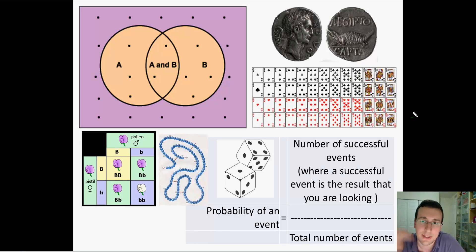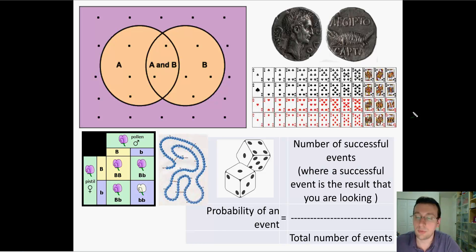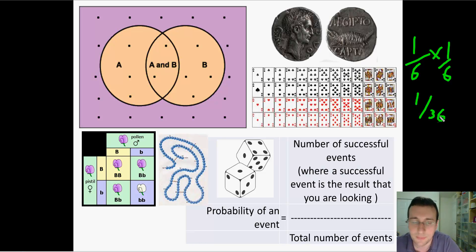Let's do another example. Pause the video and calculate: what are the chances of rolling one die and getting a 6, and then rolling a second die at the same time and also getting a 6? The chance of getting a 6 is one out of 6. Since what happens to one die has nothing to do with the other, you multiply: one-sixth times one-sixth equals one out of 36.